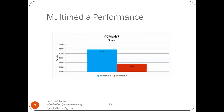Here is PC Marks — that is multimedia performance. Multimedia means when you are working with videos and images, how your images appear on the screen, the sharpness and contrast of various images and videos. Then Windows 8 is having higher performance compared to Windows 7 in multimedia.